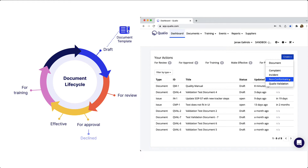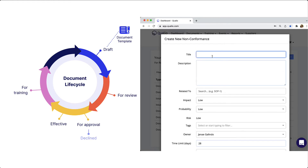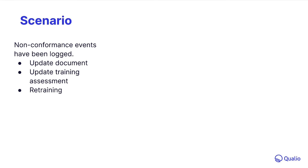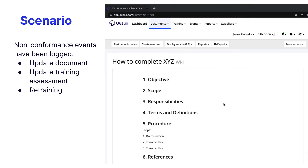This is also documented in Qualio and part of document control. When an effective procedure is not followed, a deviation or nonconformance event should be logged and linked back to the related policy, procedure, or work instruction. These event logs should be leveraged to identify which documents teams should be retrained on. This is the reality of working with humans — sometimes knowledge isn't committed to long-term memory, and sometimes our documents aren't as clear as we thought they were. Let's use this example to demonstrate how updating documents is at the crux of document control. It's one thing to create a new document; it's a whole other beast to keep them updated.